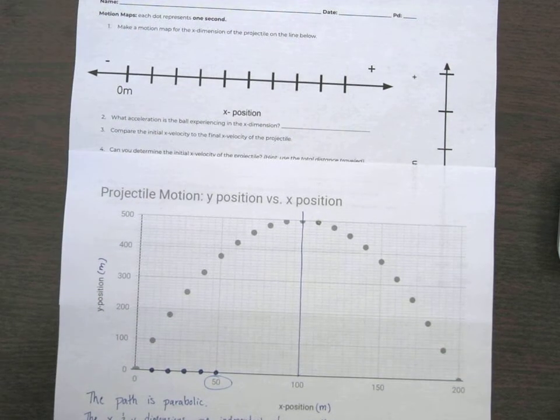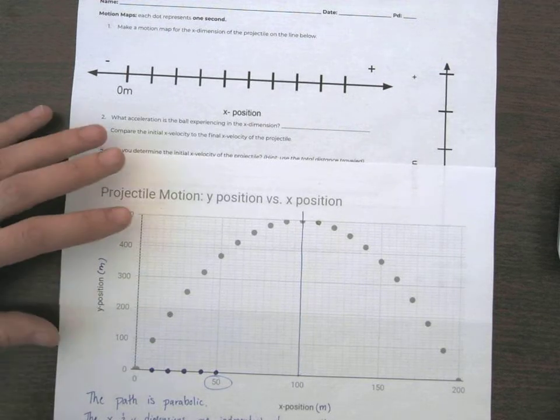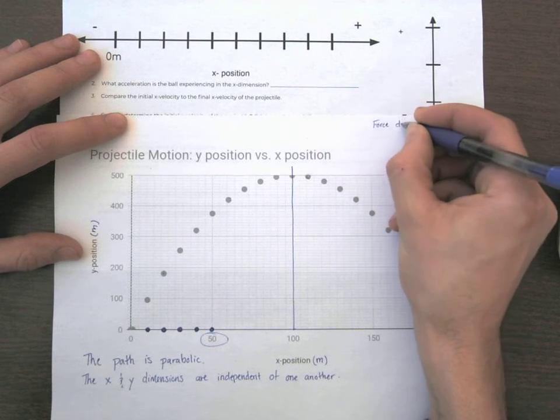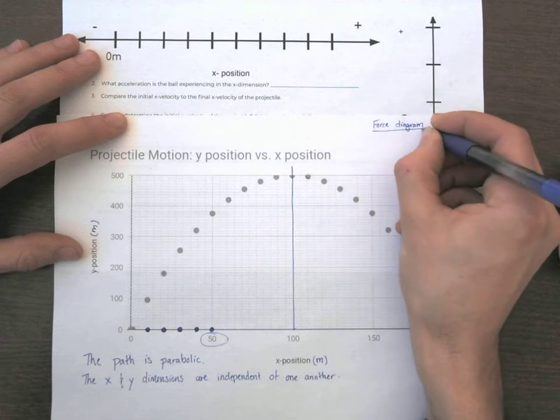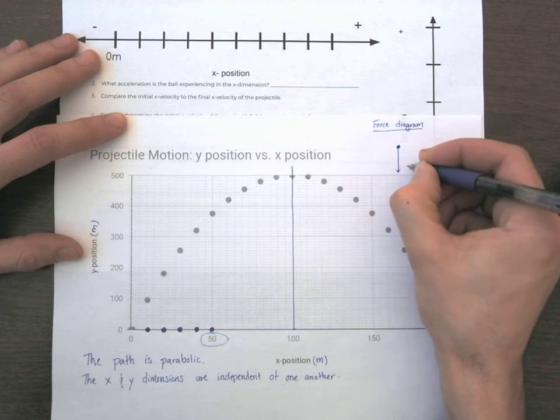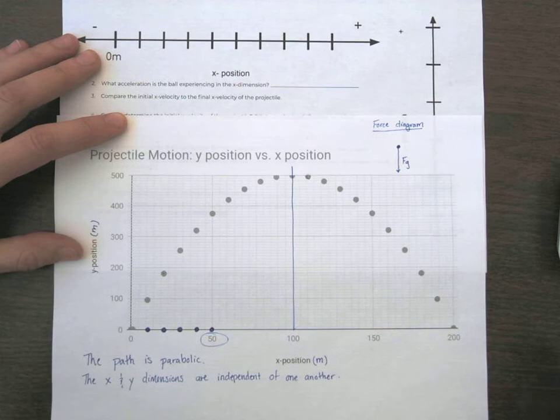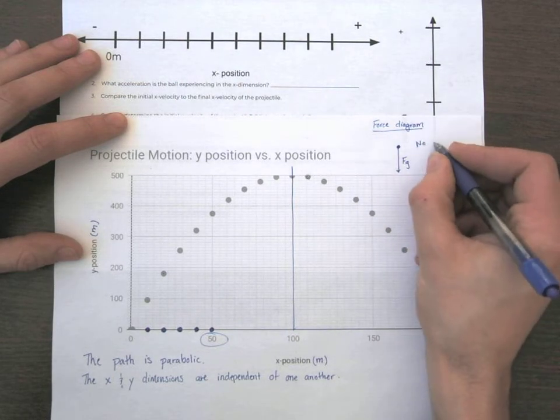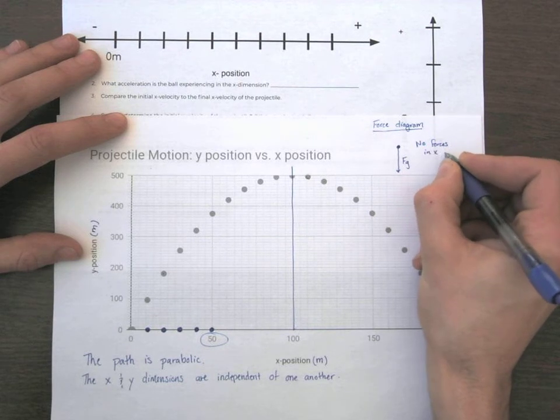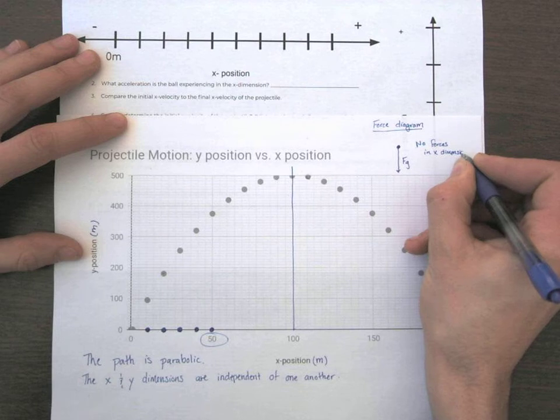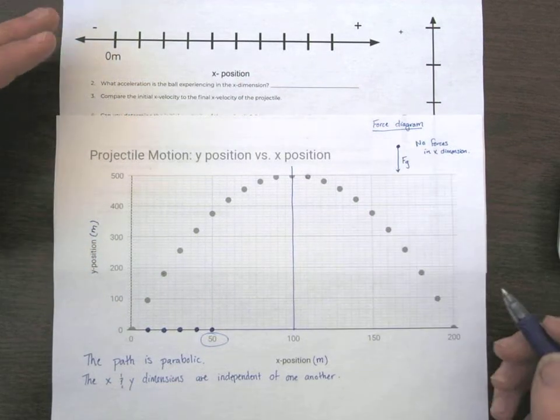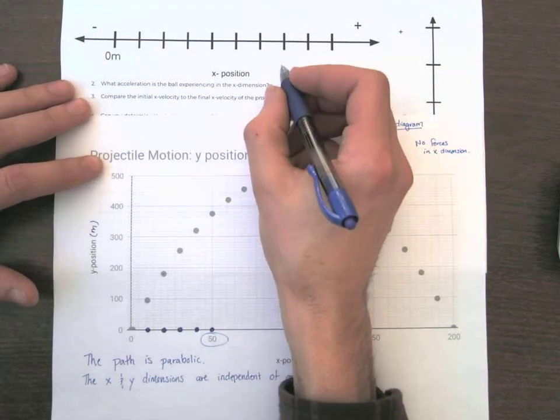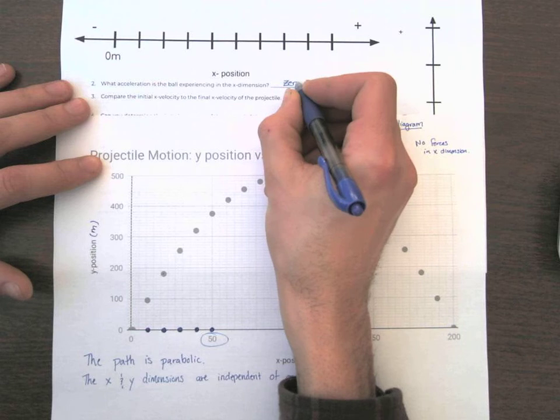Number two here asks, what's the acceleration of the ball in the X dimension? If we look back, I'm going to use this space right here. If we draw a force diagram, remember that when the ball is in the air, the only force that's acting on it is the force due to gravity or its weight down. So there are no forces in the X axis or X dimension. No forces in X dimension. So if there's no forces, that also means that there's no net force. They're balanced because there's zero. That means there's no acceleration. So the acceleration in the X dimension is zero.